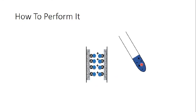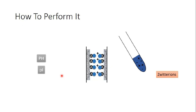In order to perform ion exchange chromatography, there is a very important factor you need to consider: pH and pI. Proteins and amino acids in general are zwitterions, which means they can be either negative or positive according to the pH of the solution.